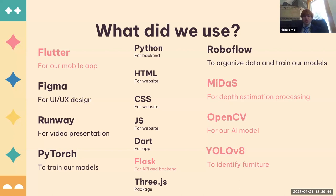We use various tools to help us achieve our goals. We use RoboFlow to train our model, label and clean data, and we use PyTorch, OpenCV, and YOLO V8 for training. For our video, we use Runway. The languages we used were Python, JavaScript, HTML, and CSS to develop our website, along with Flask. We also made a mobile app using Figma for UI and UX design, with Dart as our primary language using the Flutter SDK.